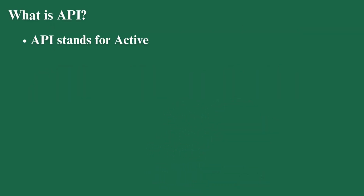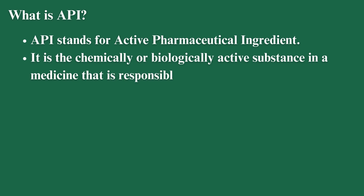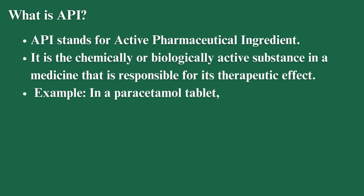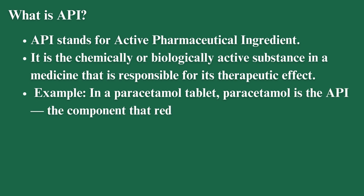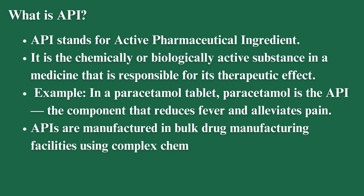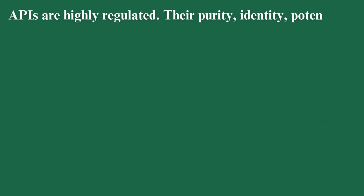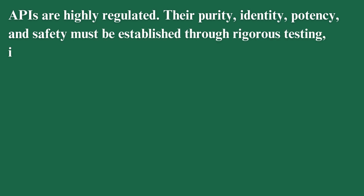What is API? API stands for Active Pharmaceutical Ingredient. It is the chemically or biologically active substance in a medicine that is responsible for its therapeutic effect. For example, in a paracetamol tablet, paracetamol is the API — the component that reduces fever and alleviates pain. APIs are manufactured in bulk drug manufacturing facilities using complex chemical synthesis or biotechnology, and are highly regulated. Their purity, identity, potency, and safety must be established through rigorous testing.